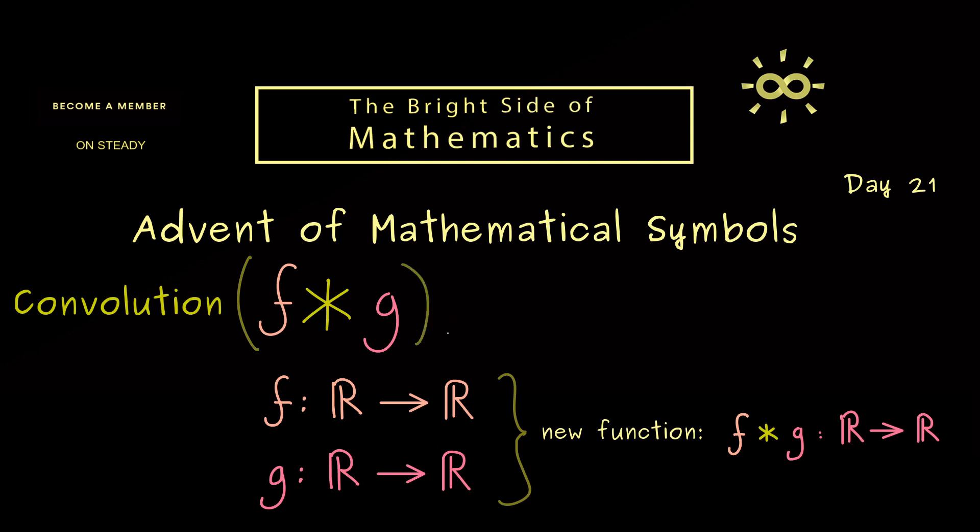So let's look at f star g at a given point x. Then we define this value by an integral that goes through all numbers. So we start with minus infinity and go to infinity. Of course, inside we have the functions f and g and the variable name for the integration. And for this I want to use the Greek letter tau.